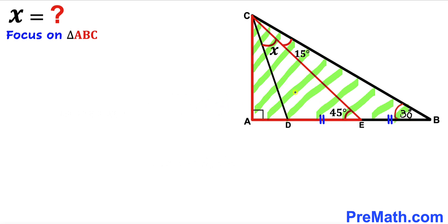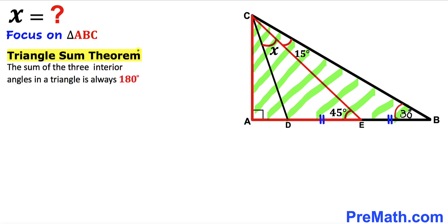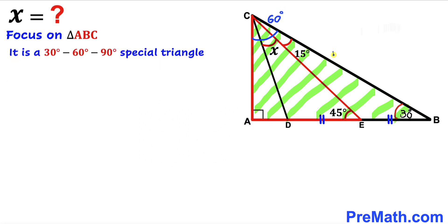Now let's focus on the big right triangle ABC and recall the triangle sum theorem: the sum of three interior angles in a triangle is always 180 degrees. In our case, angle BAC is going to be 60 degrees. This is a 30-60-90 special triangle, since one angle is 90 degrees and the whole angle BAC is 60 degrees.